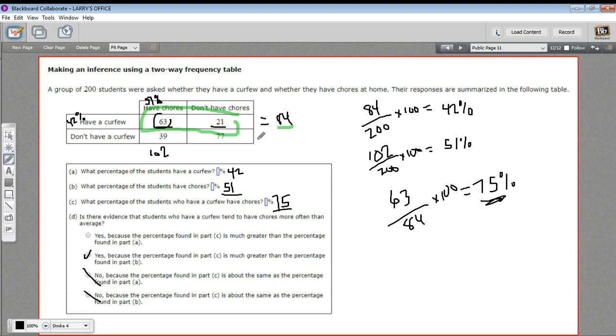So that is how to analyze the data in a two-way frequency table in order to make an inference.